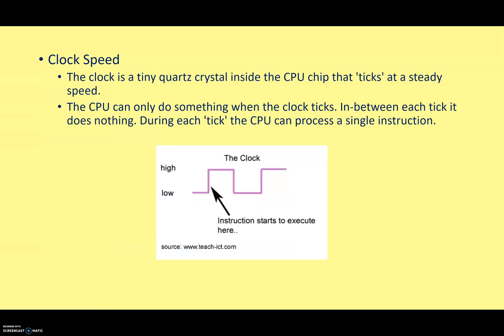Well, actually, that is a bit of a simplification. How much a CPU can do in one clock cycle or one clock tick is a little bit more complicated than that. However, for GCSE computer science, that's all you need to know.